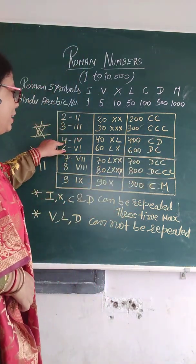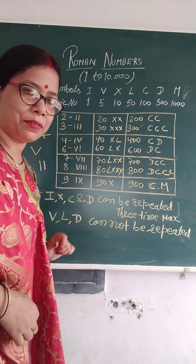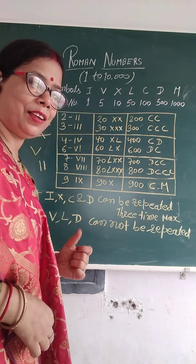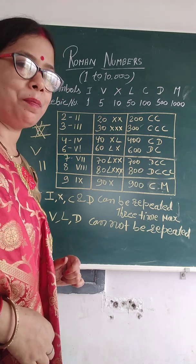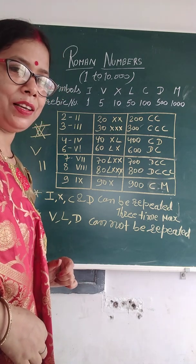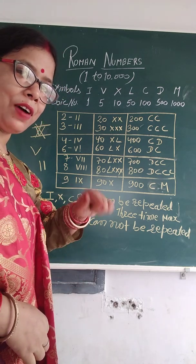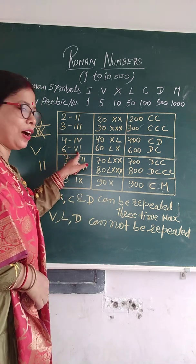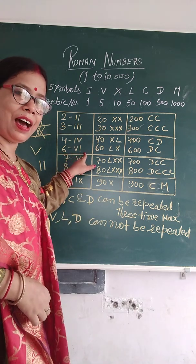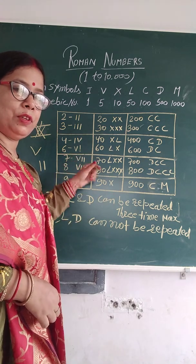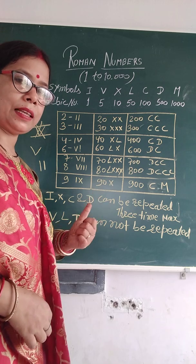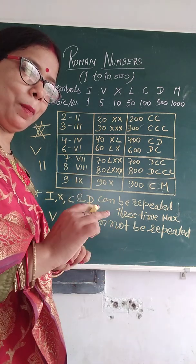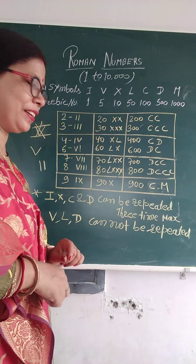V for 5 — if 1 is placed before it, that's 4, because 5 minus 1 equals 4. And 5 plus 1 equals 6, so IV means 4 and VI means 6. Means: smaller symbol pichhe laga to minus, aaghe lagega to plus — yeh hamesha yaad rakho.